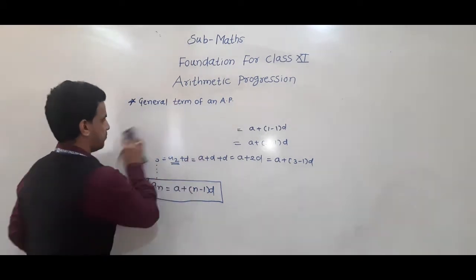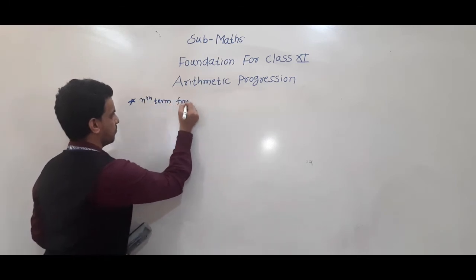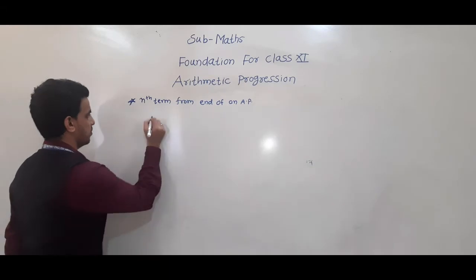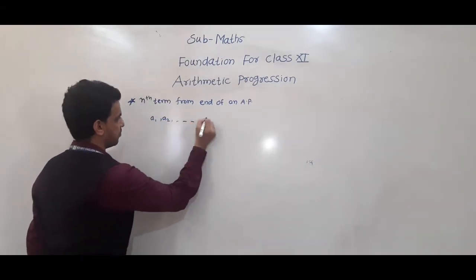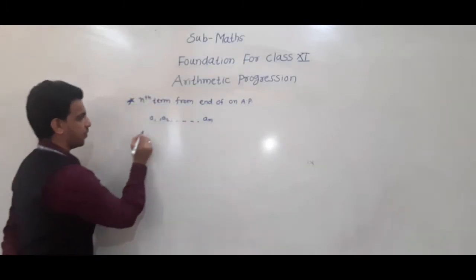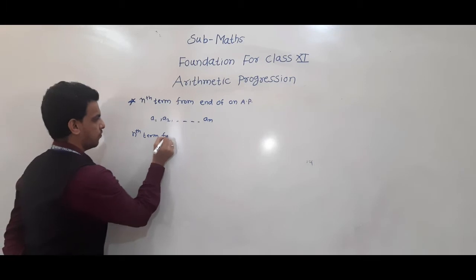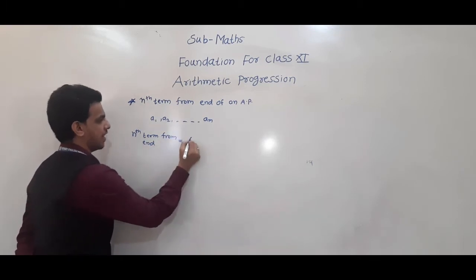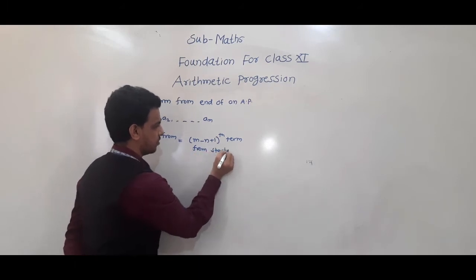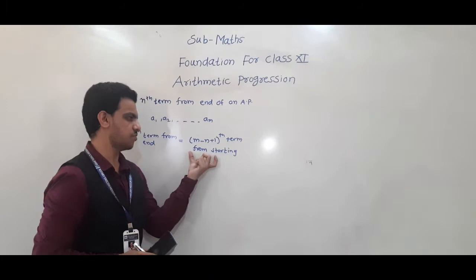nth term from end of an AP. Suppose a1, a2, a3 up to am — meaning there are m terms in total. If we have to find the nth term from the end, the nth term from end is the (m − n + 1)th term from the starting.